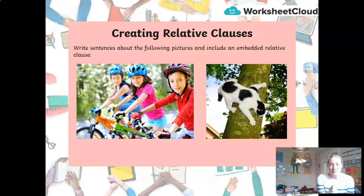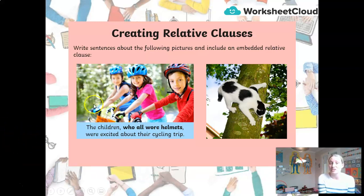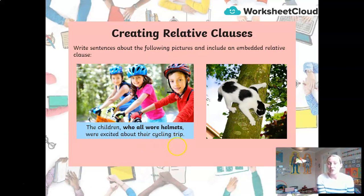I'm going to show you my examples — I'm sure yours are much better! Here is my first example: 'The children who all wore helmets were excited about their cycling trip.' It's a relative clause starting with 'who,' which is a relative pronoun, embedded in the middle of the sentence. The independent clause — 'The children were excited about their cycling trip' — makes perfect sense on its own. The relative clause gives more information about the children, the noun.